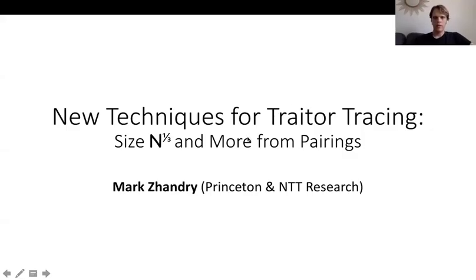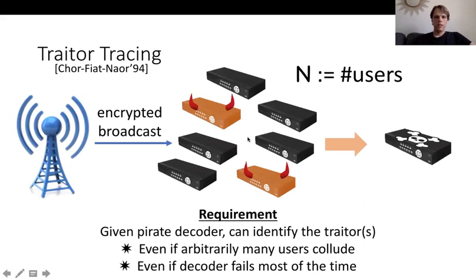Today I will be talking about some new results for traitor tracing. Traitor tracing solves the following problem: we have a content distributor who is encrypting a broadcast to a bunch of recipients, and each recipient has their own secret key. What we are concerned about is that one of the recipients may take their secret key and distribute it — maybe in the clear, or maybe embedded in some sort of decoder device. What the content distributor would like to do is, if they ever come across such a decoder device, they want to be able to identify the traitor, even if arbitrarily many users collude in order to build the decoder.